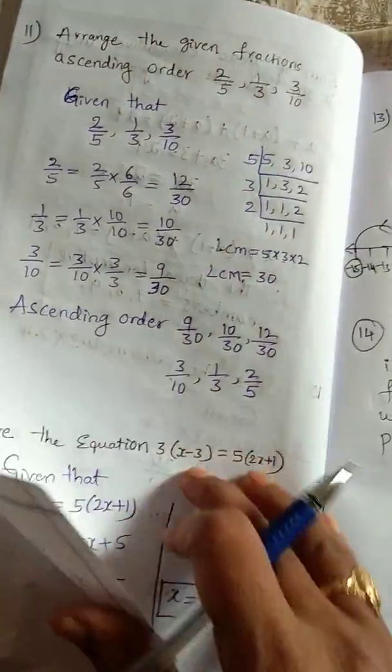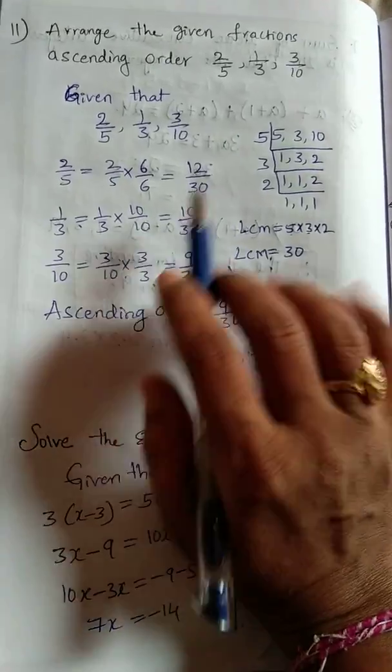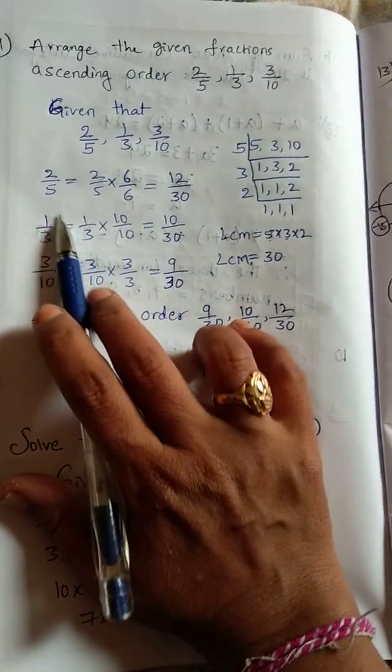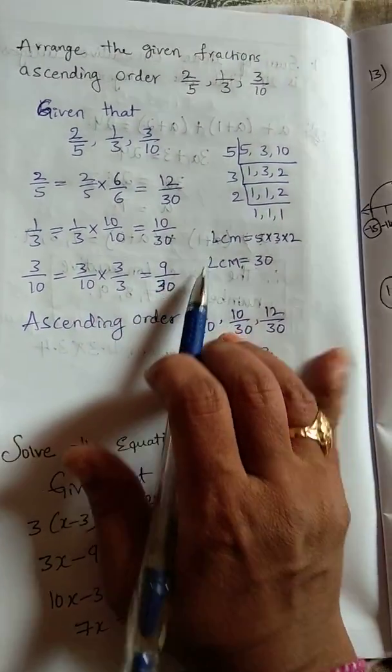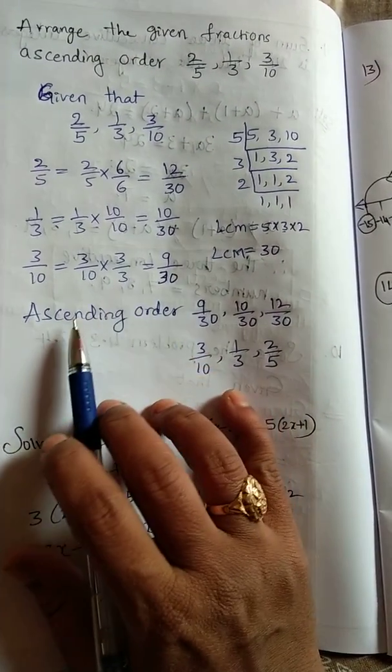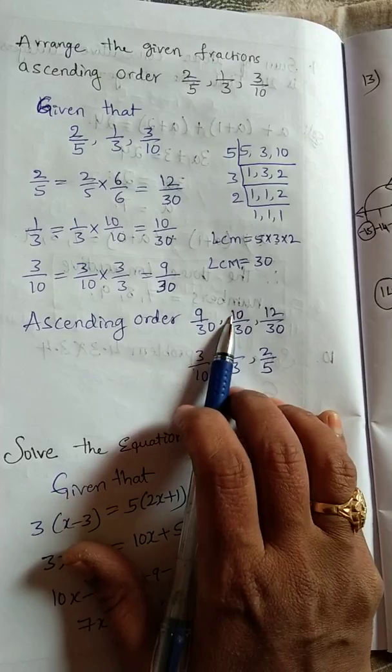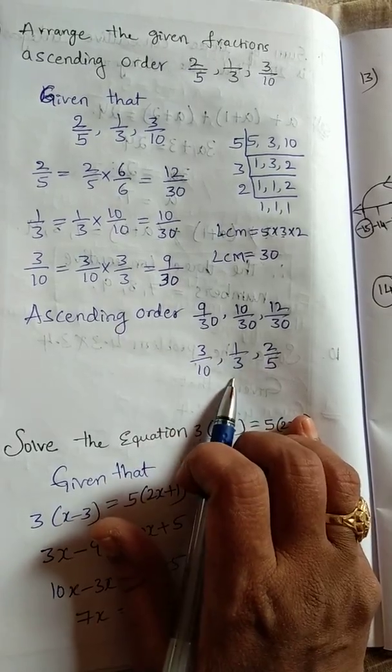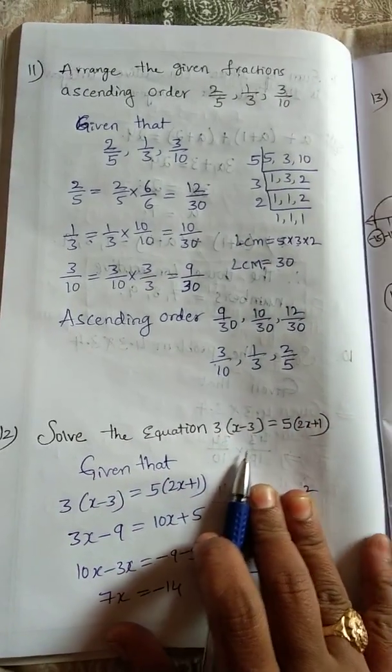Next question: arrange the given fractions in ascending order. Ascending means small to big. Here given, first we take the LCM, that LCM is 30. Convert these unlike fractions into like fractions by multiplying proper table. After getting equal denominators, those are like fractions. Then we compare the numerators and write in ascending order: 9 by 30, 10 by 30, 12 by 30. 9 by 30 means 3 by 10, 10 by 30 means 1 by 3, 12 by 30 means 2 by 5. These are the ascending order of the given fractions.